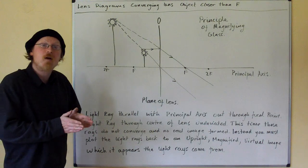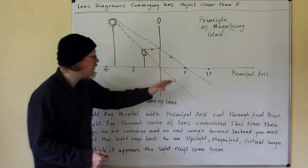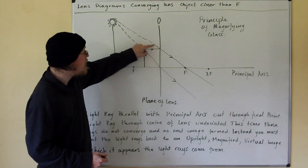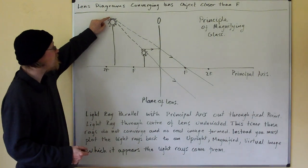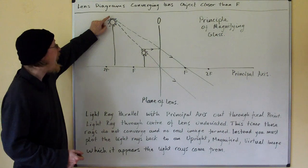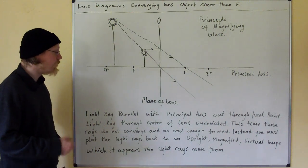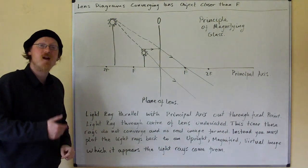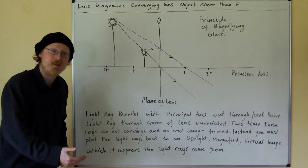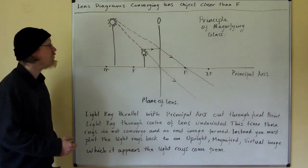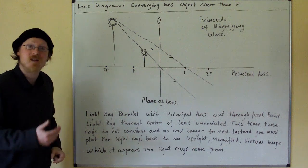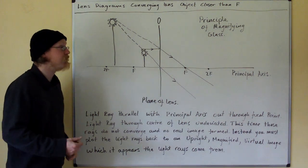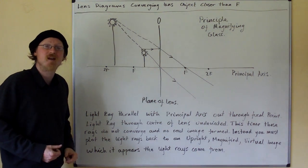But these are now diverging light rays. So what you have to do is take them back to where they appear to converge, and this gives you an upright magnified virtual image which it appears the light rays come from. And this is the principle of the magnifying glass.